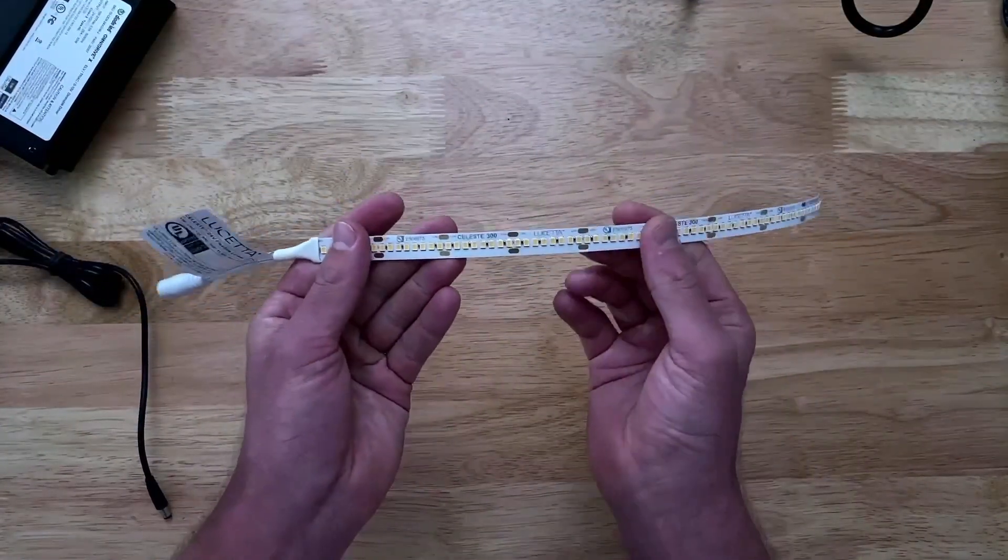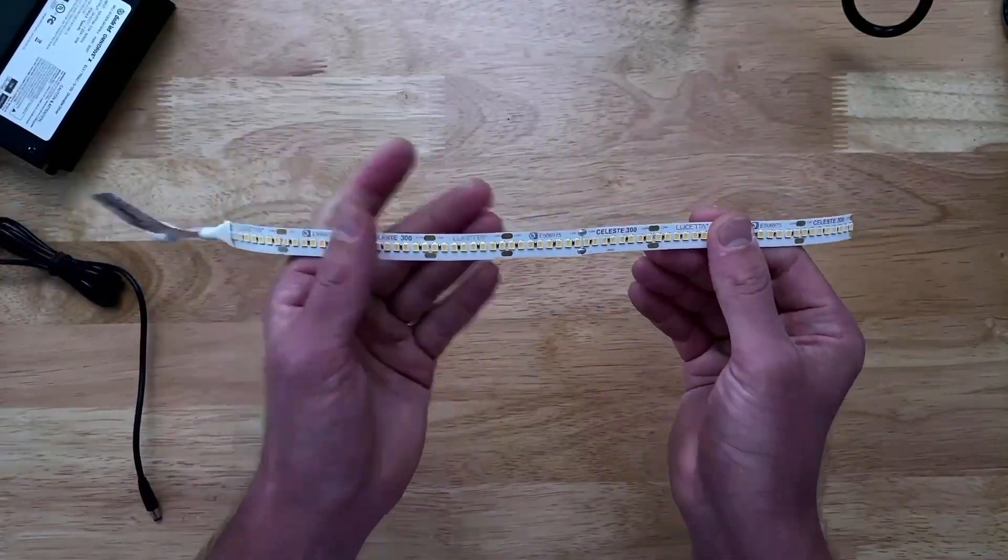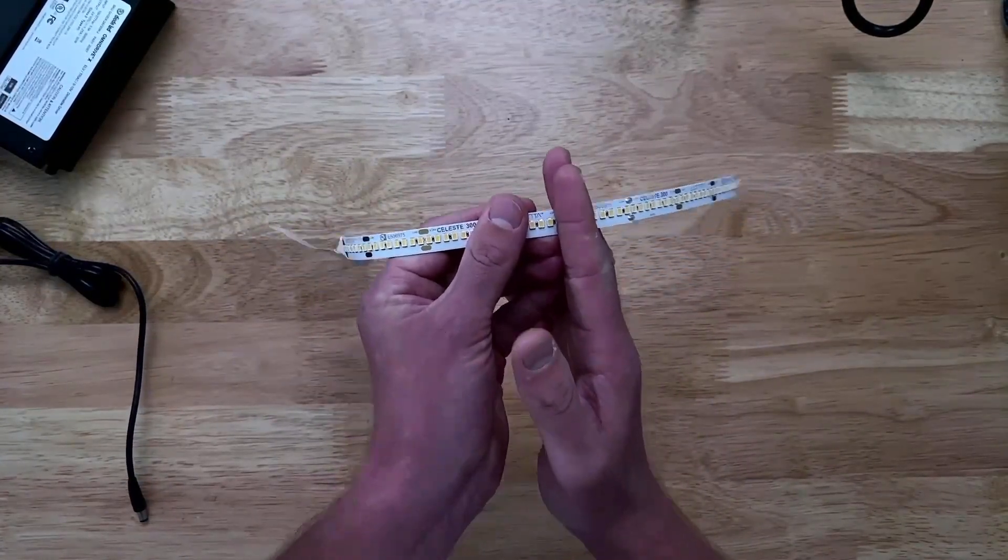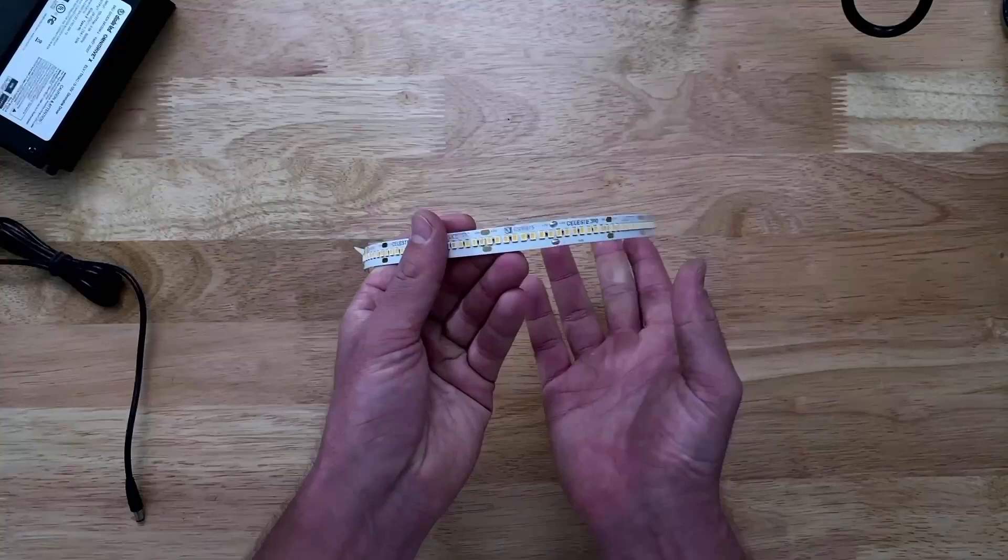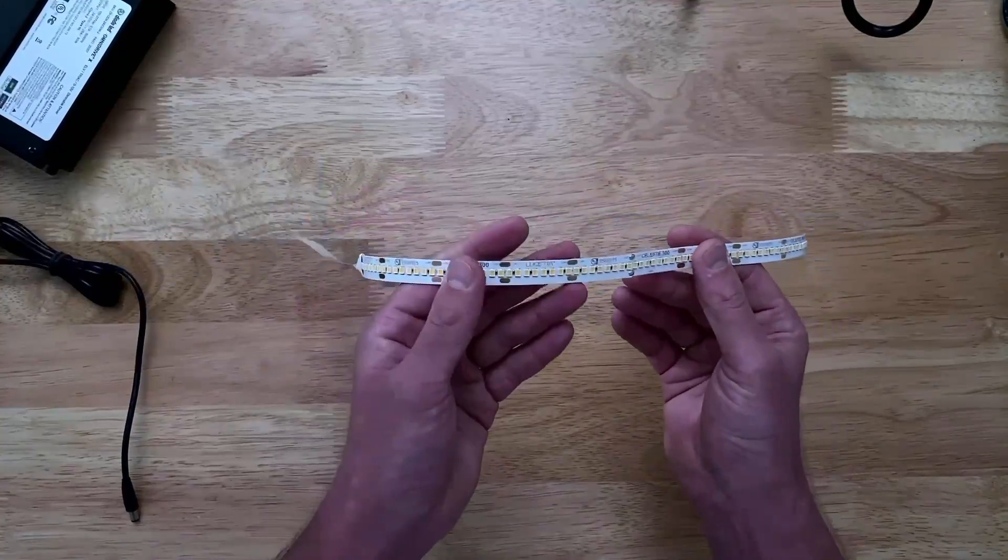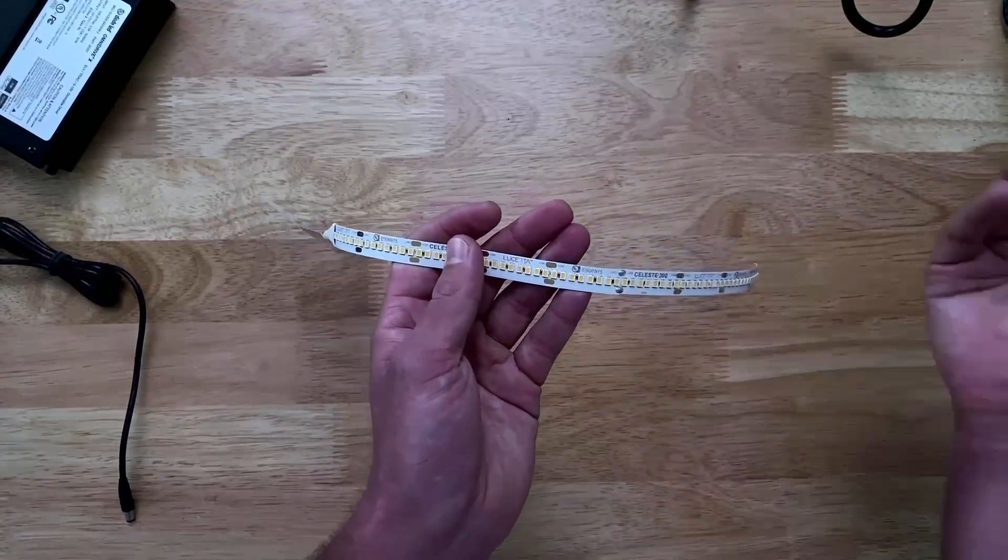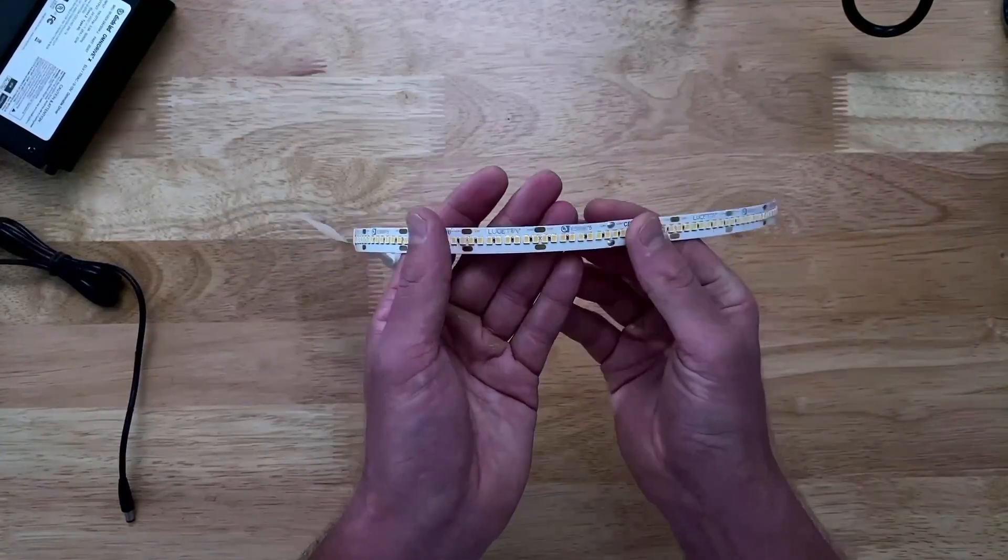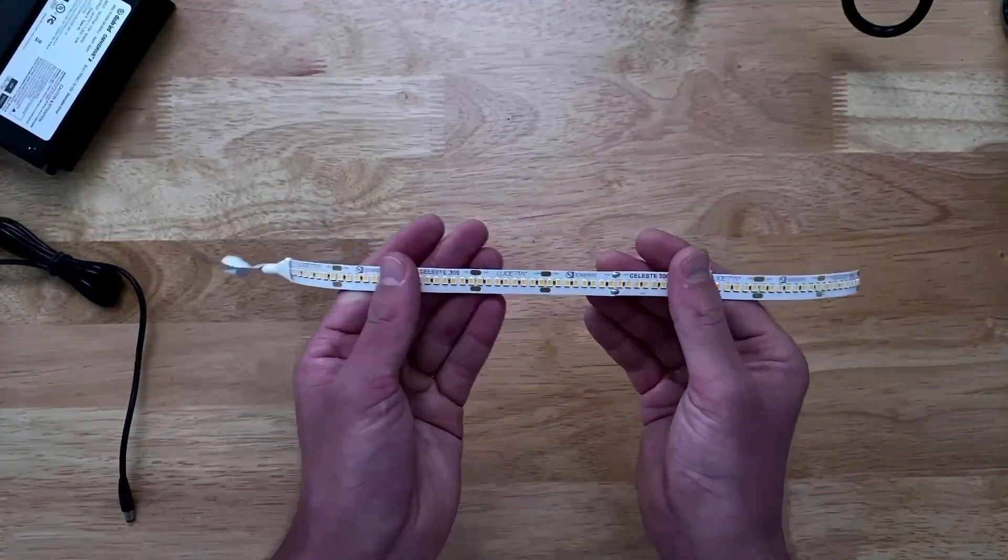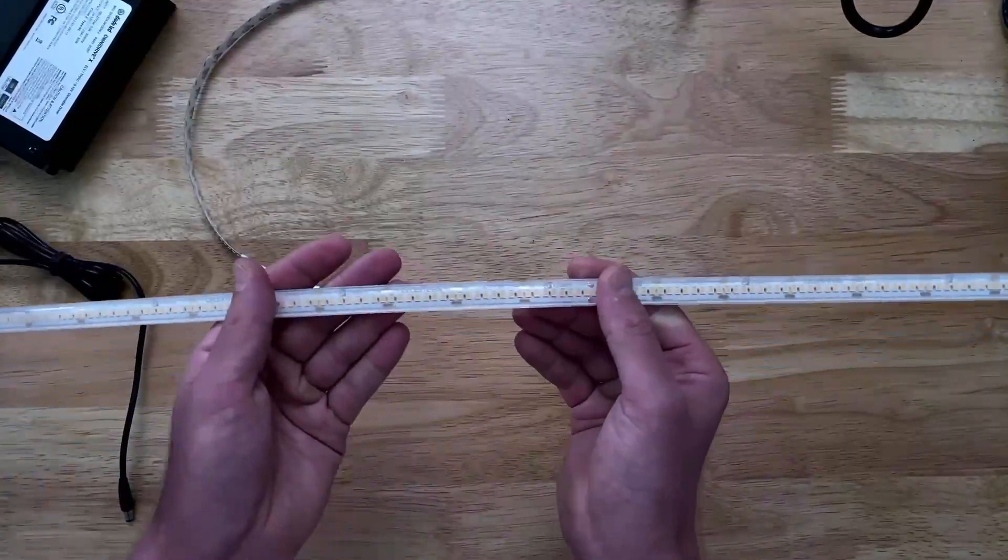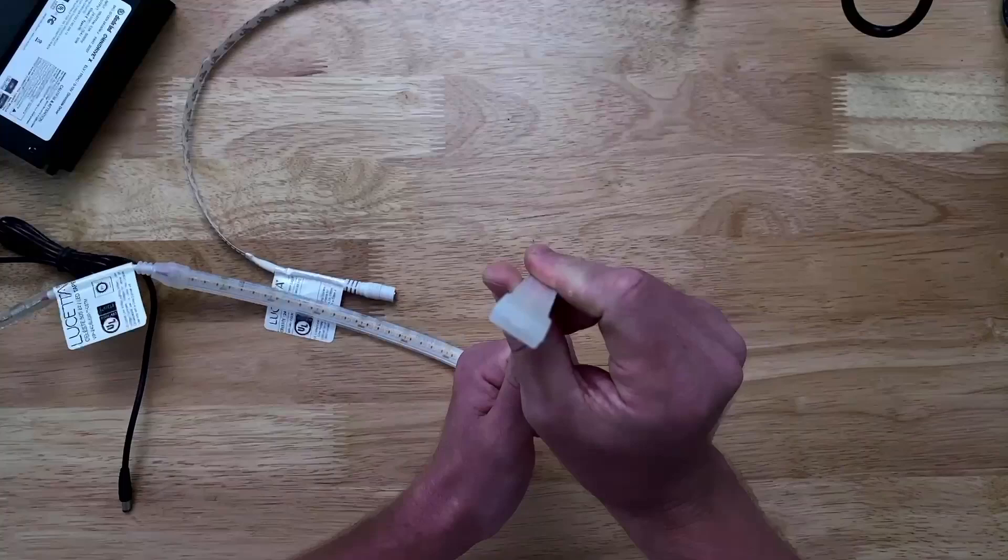Last couple things to note too with our Celeste tape light is we are one of the only manufacturers out there that you can cut our tape light in field and solder and it won't void the warranty. So make sure that all your installers know that. That is a huge one. Most of the time if they screw up the solder, then the onus is on them. They have to take the responsibility and they end up having to take the bill as well.